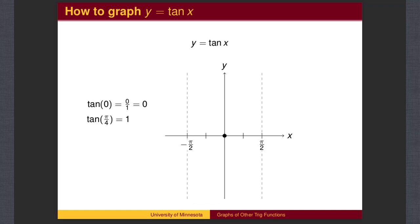The sine and cosine of pi over 4 are both the square root of 2 over 2, and when you divide square root of 2 over 2 by itself, the answer is 1. So we will place a point at pi over 4 comma 1.